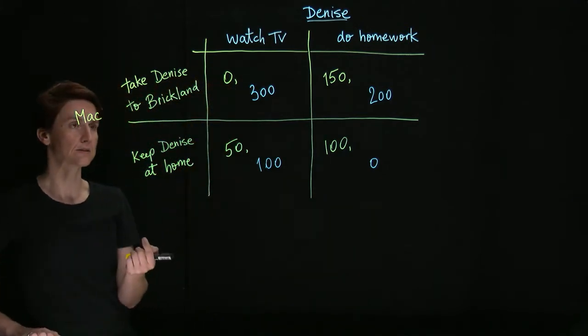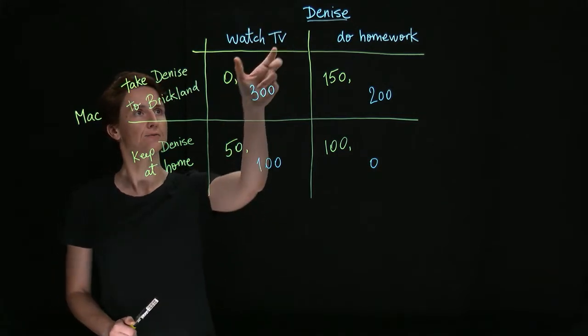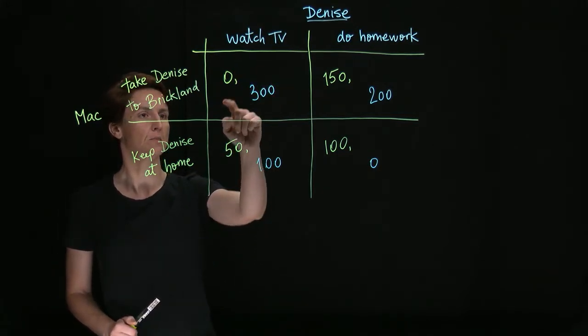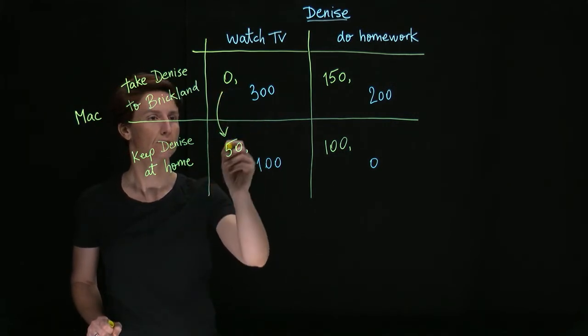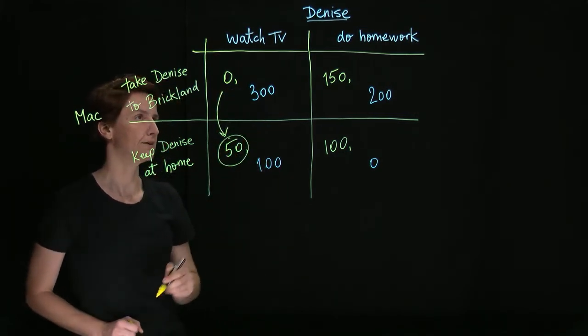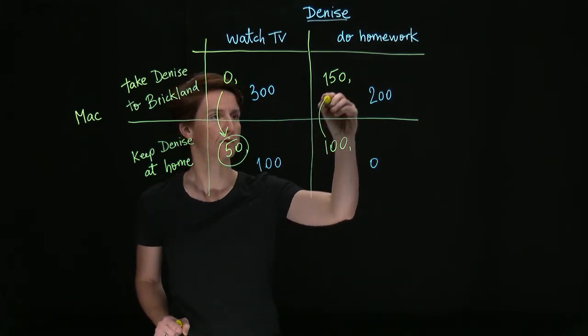So let's analyze first the best responses in this game. First, Mac, if Denise were to watch TV, Mac would prefer to keep her at home. Now, if Denise were to do her homework, he would prefer to reward her.